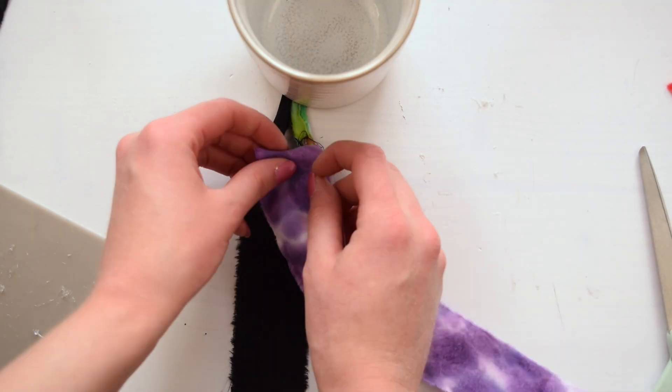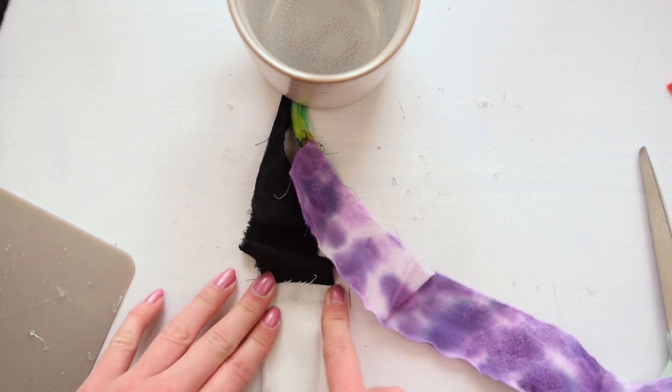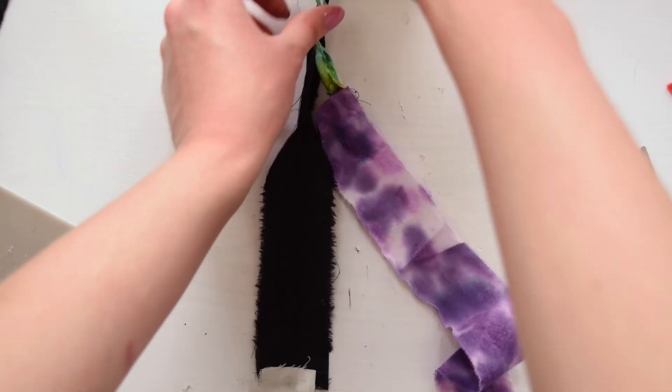Once I reached the end of a color I just used some hot glue to attach a new piece to the end and continued on my way with the rope braid.